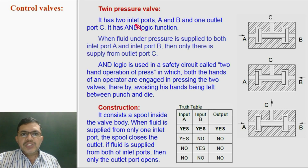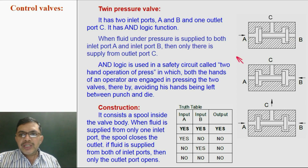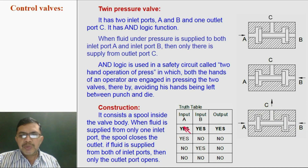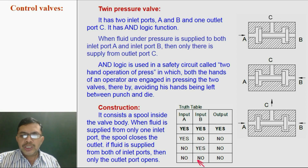Twin pressure valve — again, this valve also has two inlet ports, port A and port B, and one outlet port, that is port C. It has AND logic function, meaning when fluid is supplied to both ports A and B together, then only there will be flow at outlet port C. If A is present and B is not, or if B is present and A is not, or there is no input A and no input B — in all these cases, there won't be output at C.